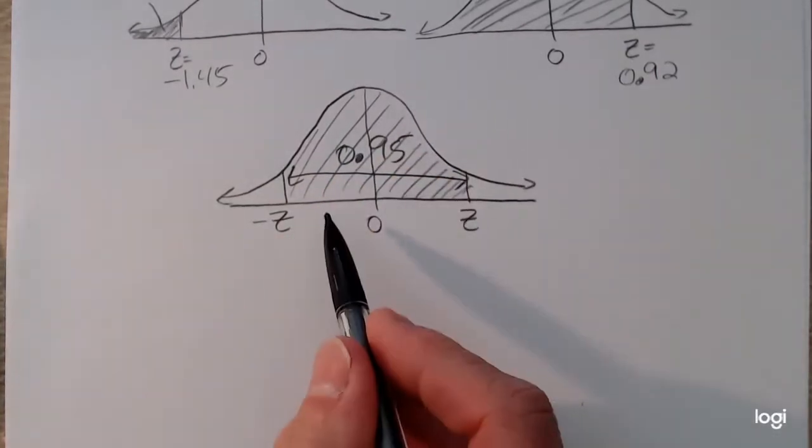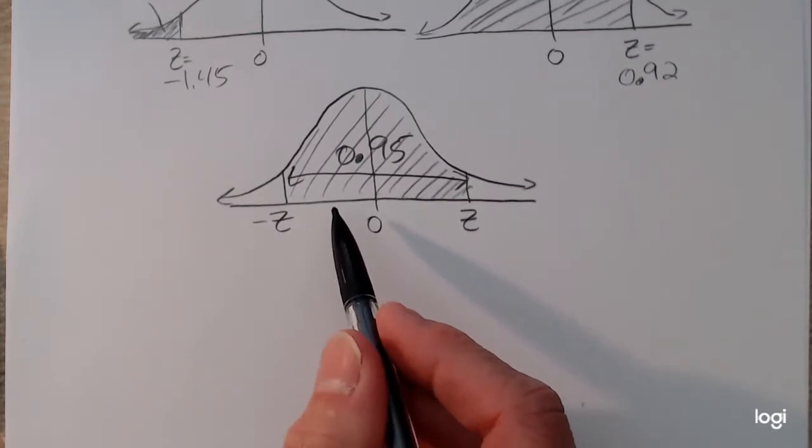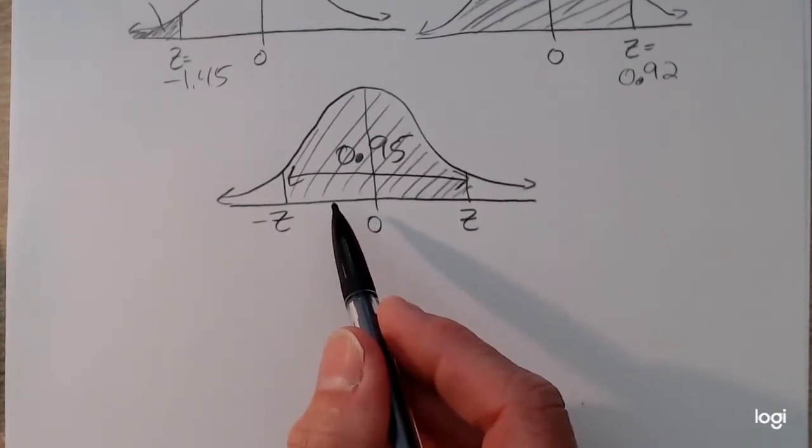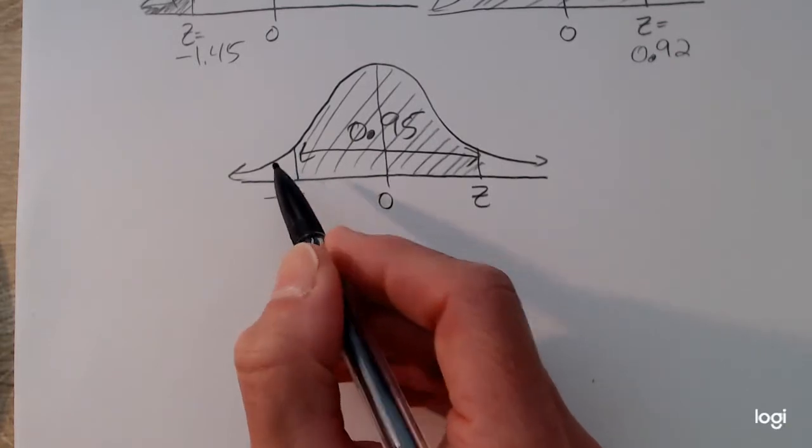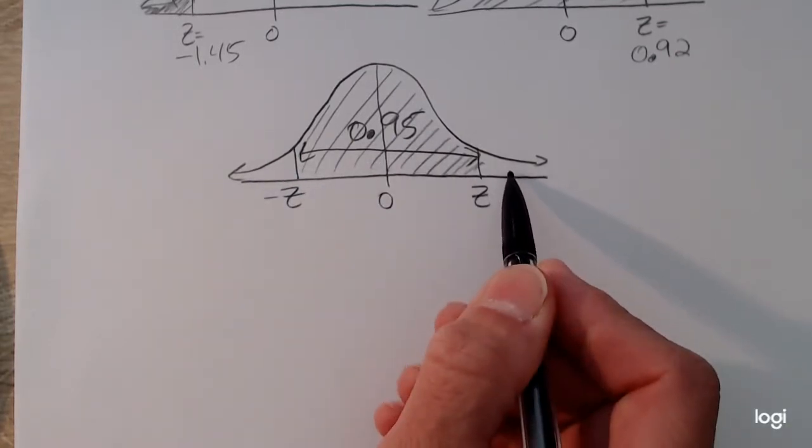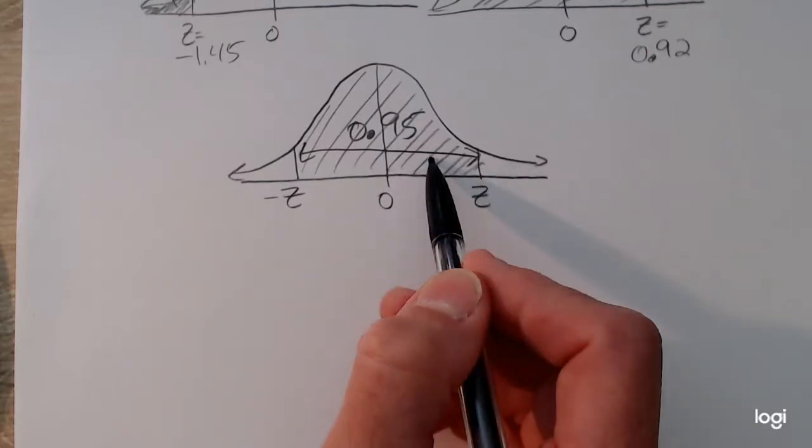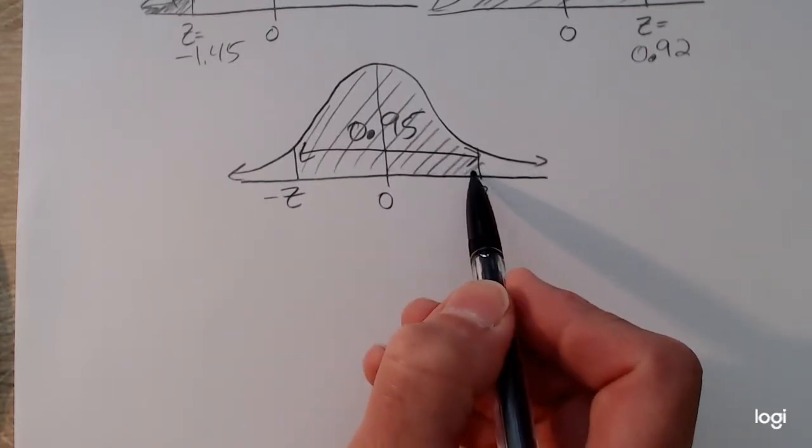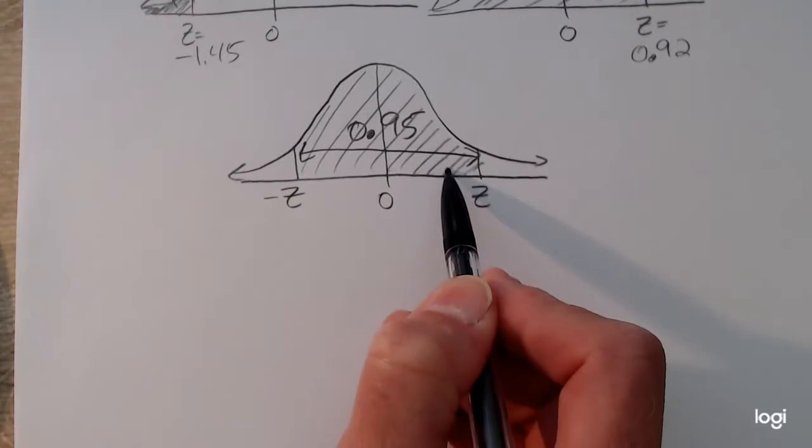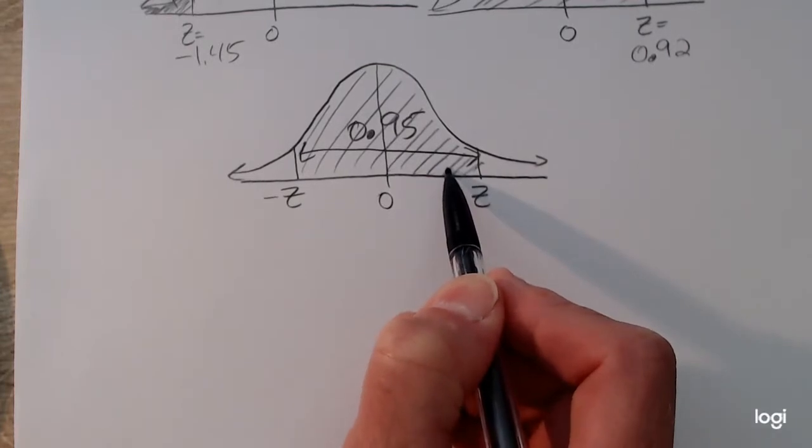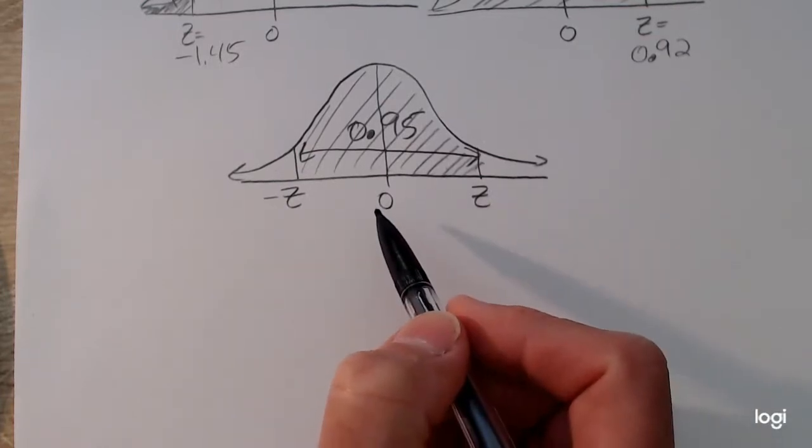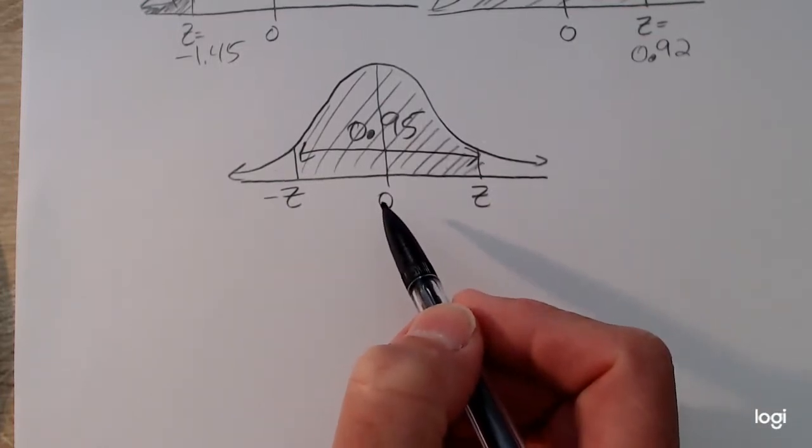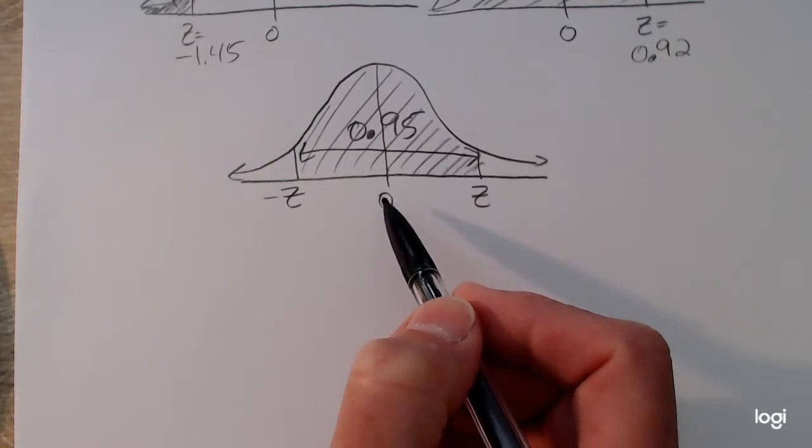So looking at this, this is certainly not a cumulative area. And our table only reads cumulatively. So we need to figure out how much area is in this lower tail. I know the total area under the curve is 1 or 100%. So if 95% is between these two values, that means 5% is left over equitably between the tails.